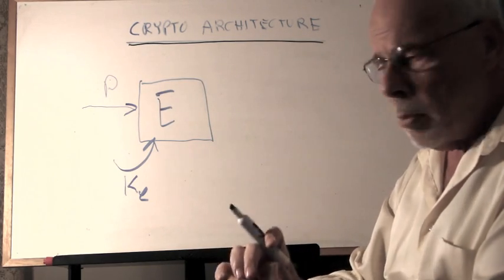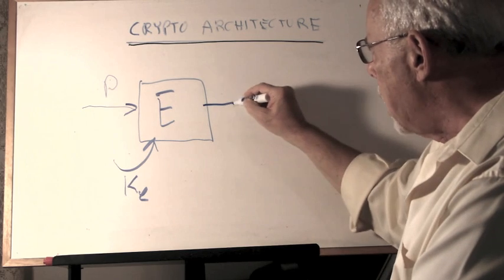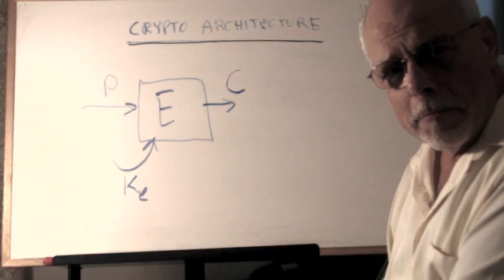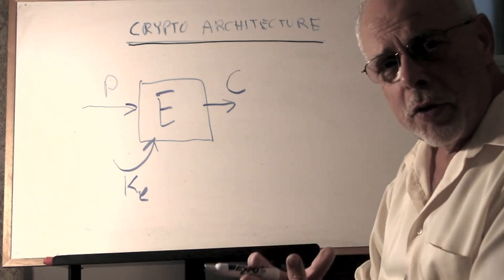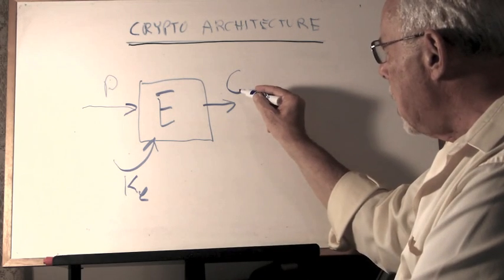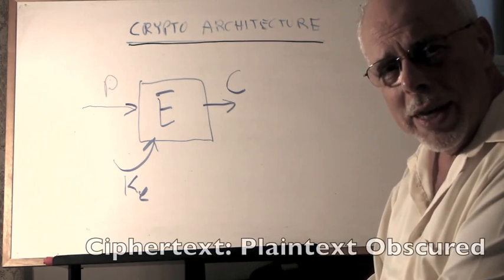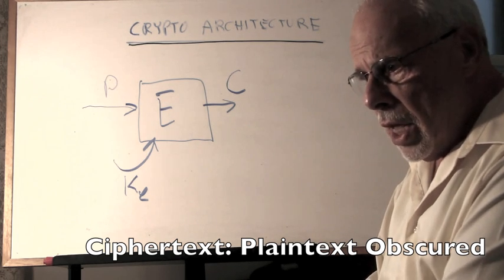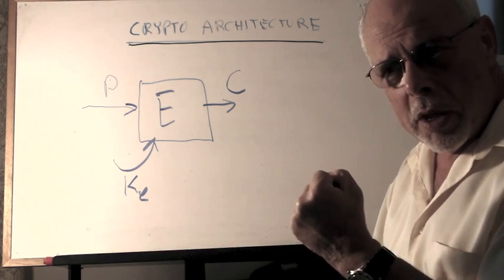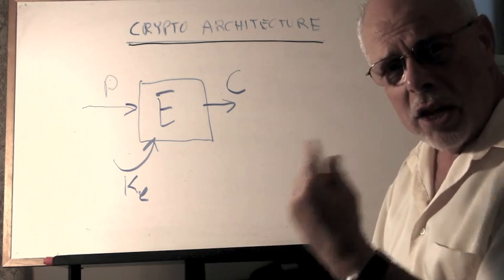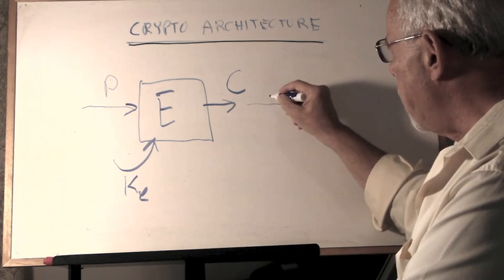It's a piece of data that together with the plaintext feed into this black box called the encryption box, where the mechanism of processing P with the impact of KE create together the ciphertext C. So C is the equivalent of P only in a different language. If you read C, you cannot figure out what the message in P is. The idea of the ciphertext is that it's the same message as in the plaintext, written in a different language so that the adversary cannot read it.